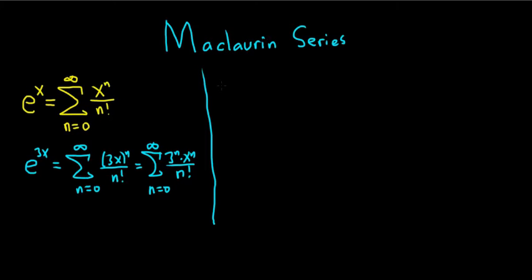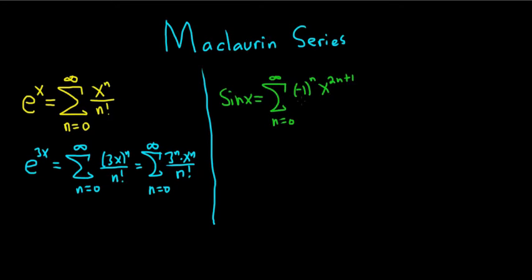Then we have the Maclaurin series for sine x. So sine x is equal to the infinite sum as n runs from zero to infinity. Sine always has a negative 1 to the n. Sine is an odd function, so it only has odd powers of x — 2n plus 1 is always odd — and on the bottom you have the same thing but as a factorial.